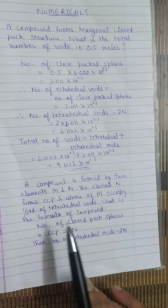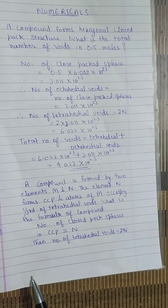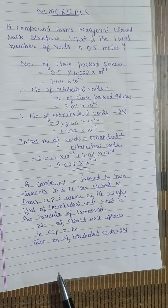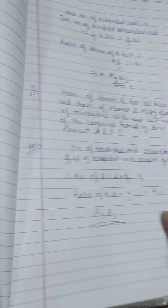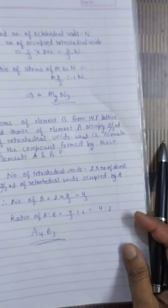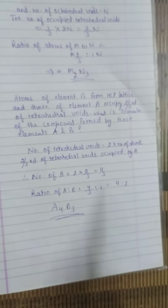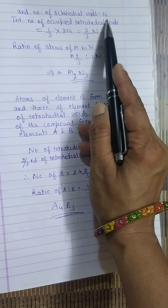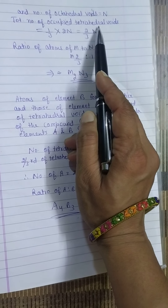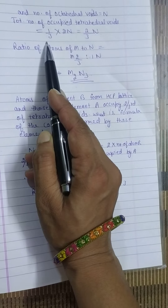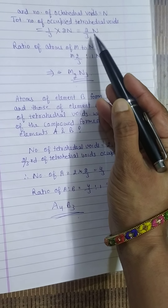We need to calculate this. The number of closed-packed spheres in cubic closed packing equals N, and tetrahedral voids equal 2N. The number of octahedral voids is N and tetrahedral voids is 2N. So the total number of occupied tetrahedral voids equals one-third × 2N, which after calculation equals 2N/3.